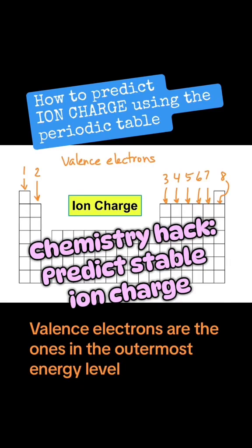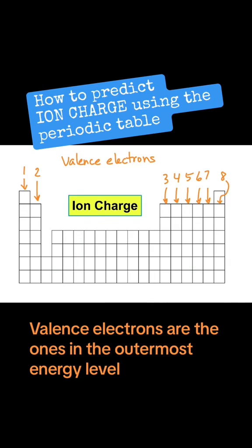I want to show you how to determine ion charge. First you have to remember valence electrons, and I have them numbered from one to eight. Now remember noble gases - they already have eight electrons and so they're not going to form ions.